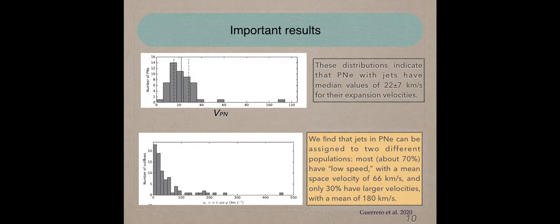In the second histogram, we have the number of outflow with their corresponding radial velocity in the x-axis. We find that jets in planetary nebulae can be assigned to two different populations. Most have a low velocity with a mean space velocity of 66. Only 30 percent have a larger velocity with a mean of 180 kilometers per second. In summary, with this work, we found two populations: planetary nebulae with jets moving at low velocity and planetary nebulae moving at high velocity.